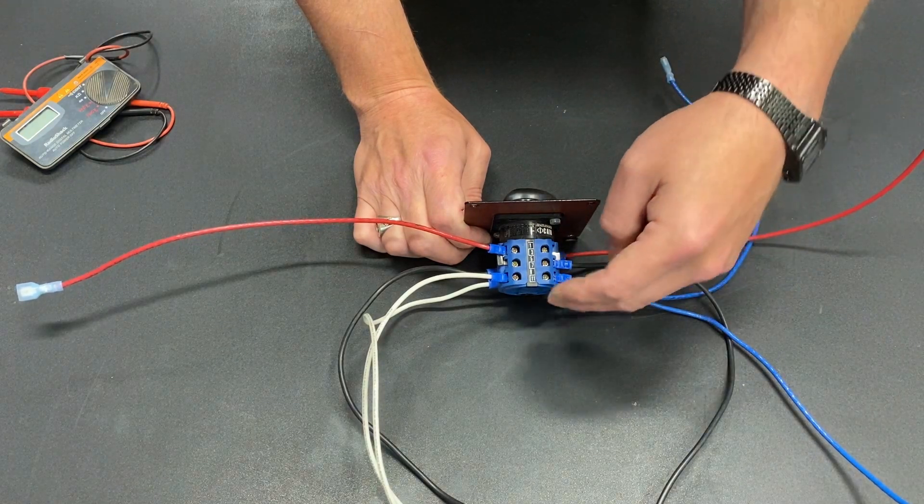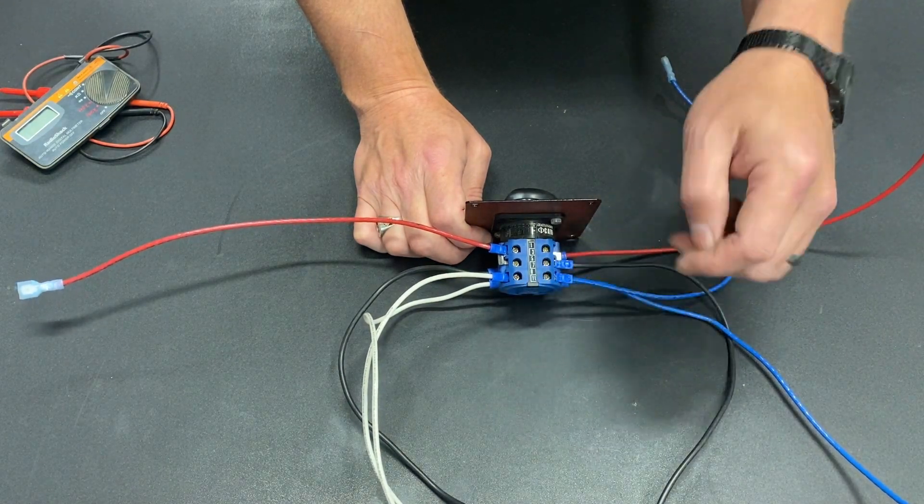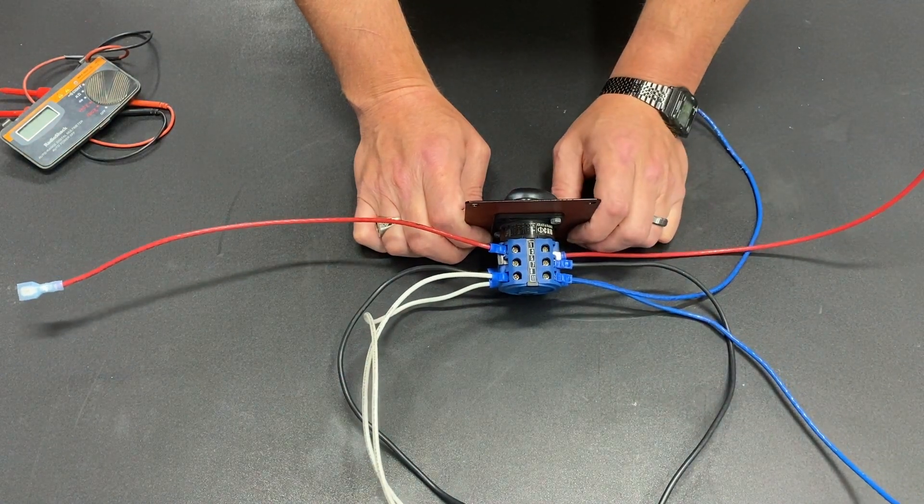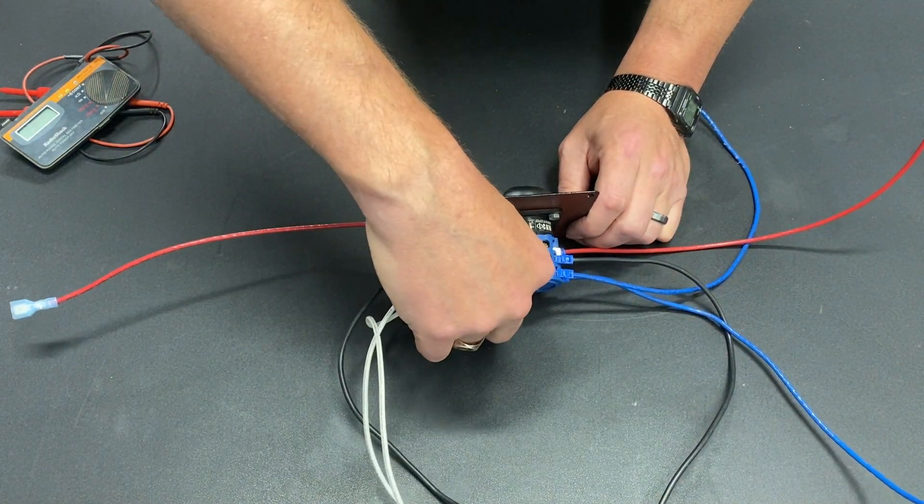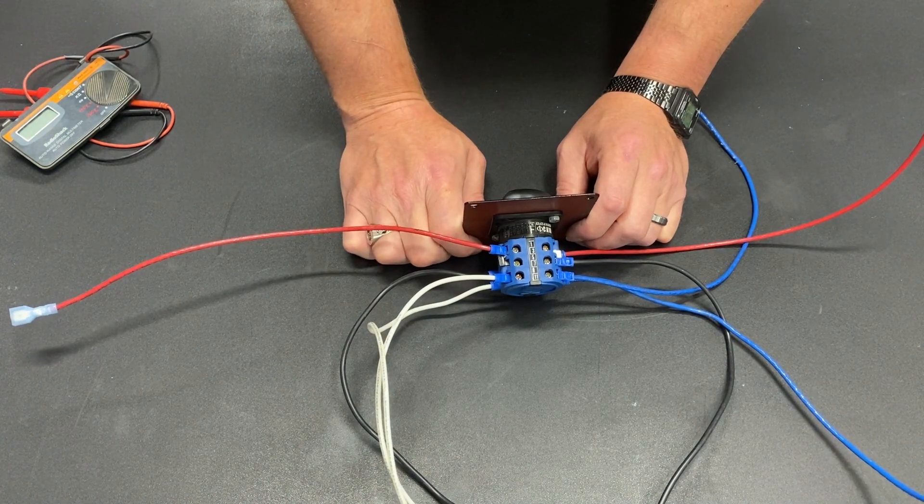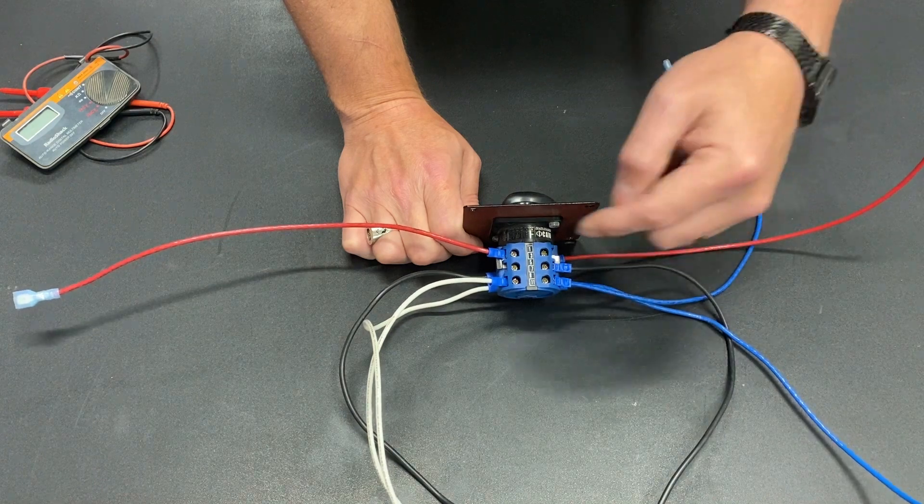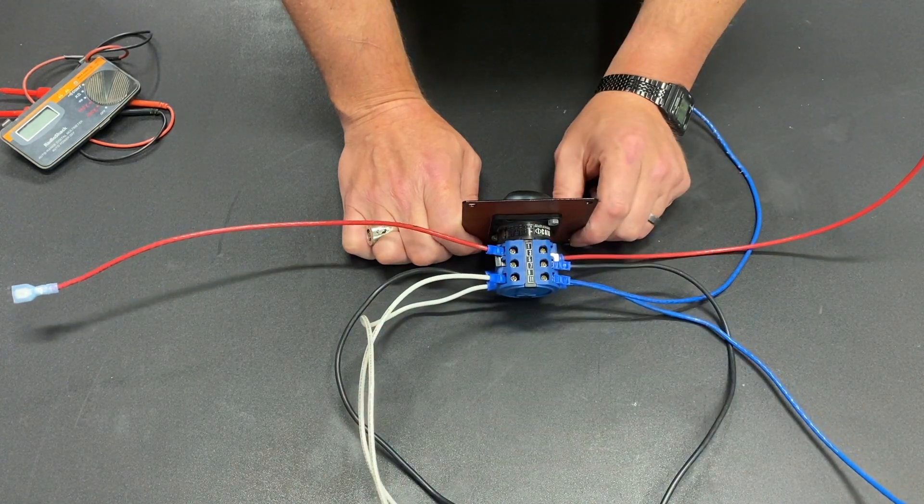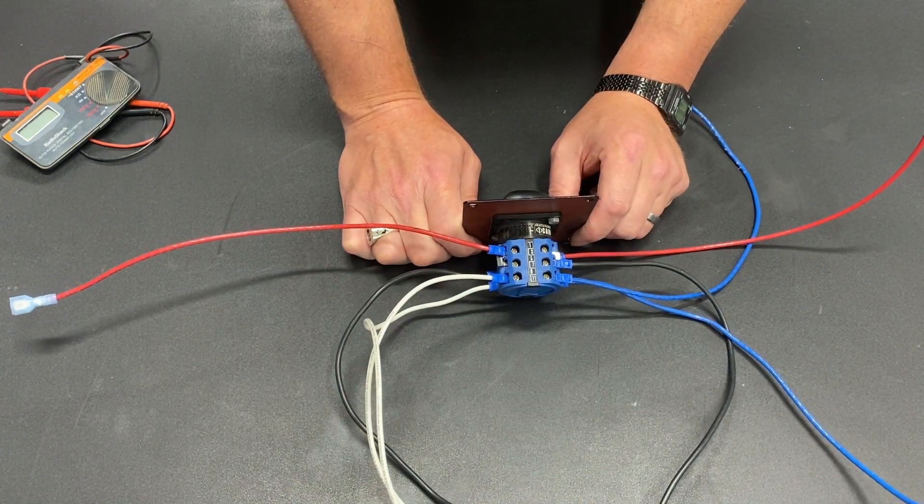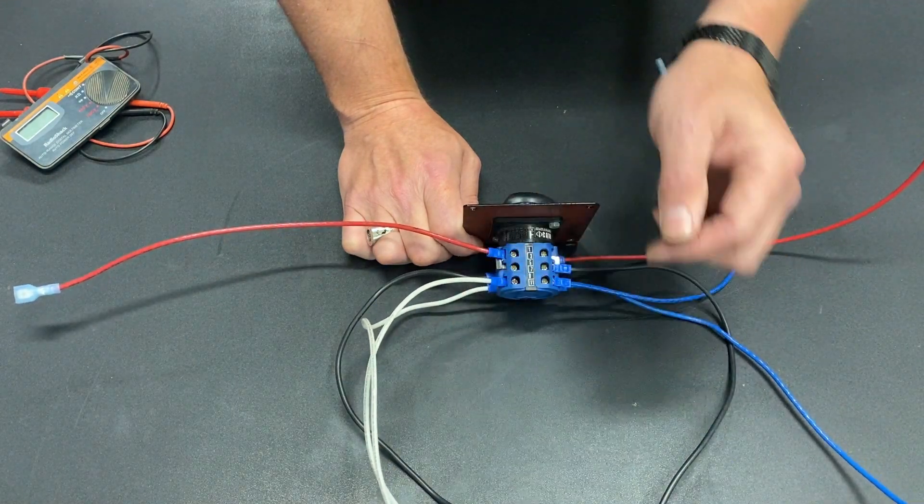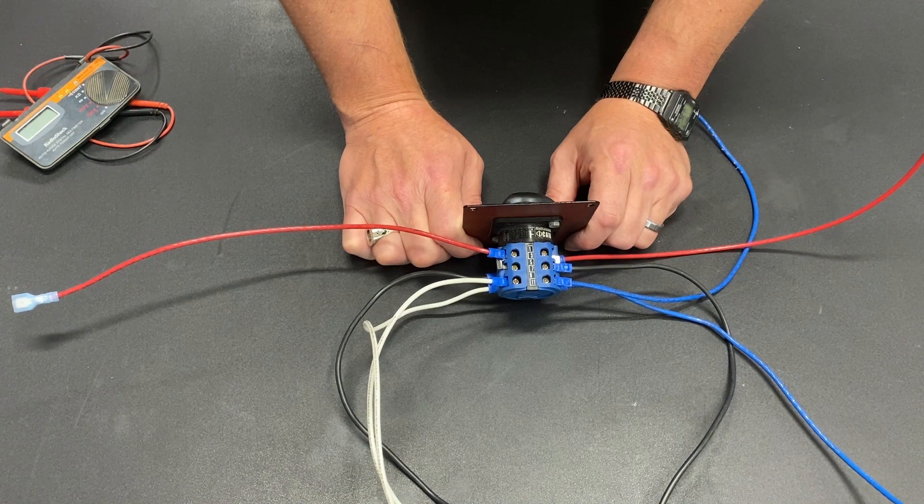And then these last four, the blue ones are going to go to my AC hot and my white ones are going to go to my AC neutral so that we're killing the power from here to here and from here to here when it's in the neutral position. But when it's in the forward position or the reverse position these wires are connected and supplying power to the relay.